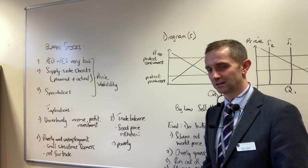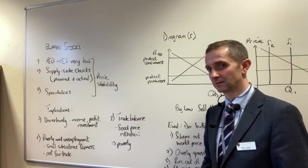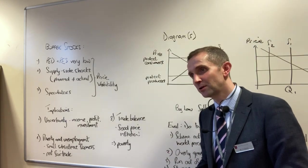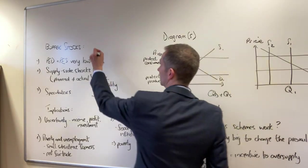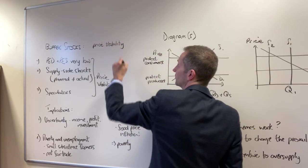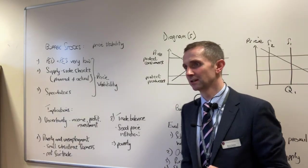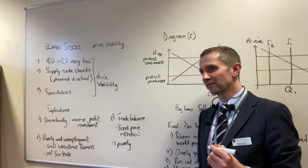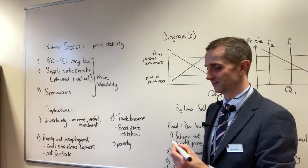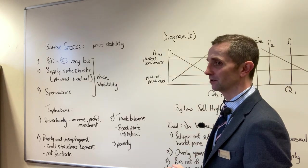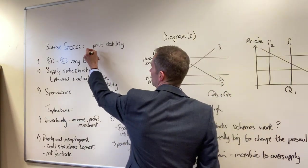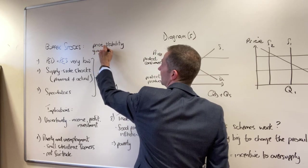Buffer stock schemes first of all are provided in order to do what? Well, to keep prices nice and stable for farmers in developing nations. Jonathan, when you draw particularly the diagram that's what it reminds you of - the exchange rate mechanism diagram, upper ceiling, lower floor. So price stability and therefore if you've got some sort of price stability you're also able to guarantee income as well.